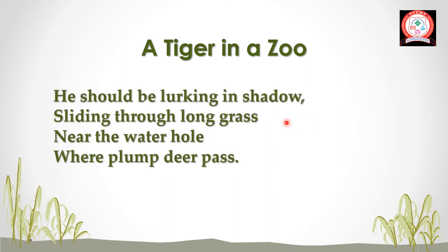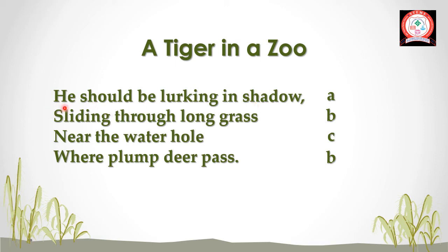For the second stanza, the rhyming scheme: 'shadow, grass, hole, pass' — grass and pass rhyme, giving A B C B again. Poetic devices: 'He should be lurking in shadow' — the 'sh' sound is repeated in 'should' and 'shadow,' which is alliteration. 'Lurking' and 'sliding' rhyme internally — internal rhyme. In 'near the water hole where plump deer pass,' the 'w' sound repeats in 'water' and 'where,' and the 'p' sound repeats in 'plump' and 'pass' — both are alliteration.